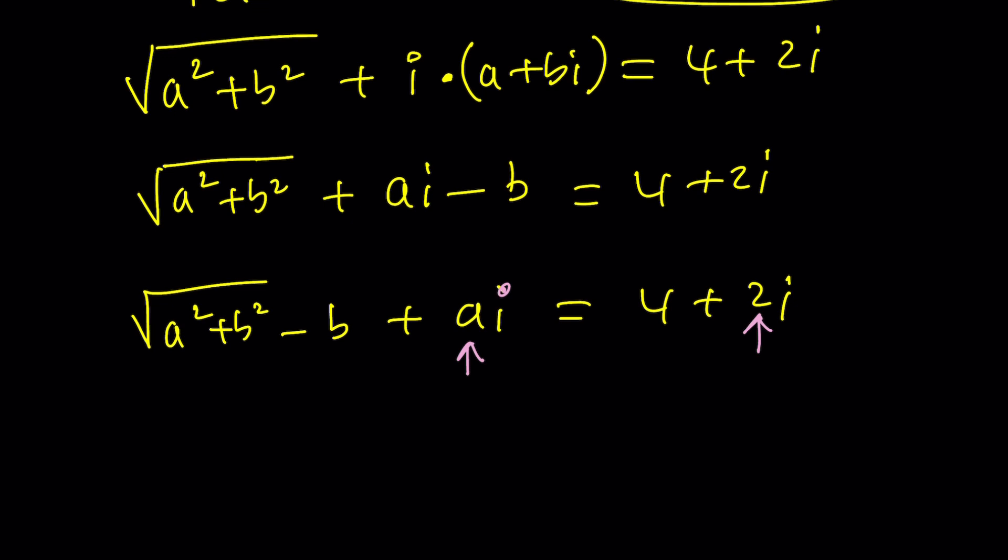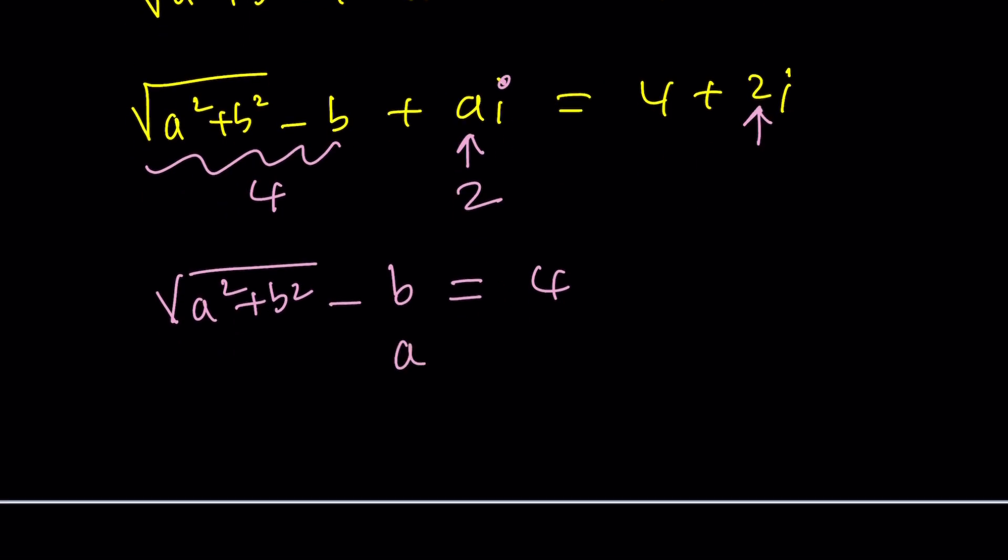So from here what are we getting? This needs to equal 4. This needs to equal 2. That gives us a very easy system of equations. This equals 4 and a equals 2.